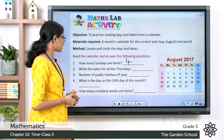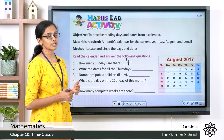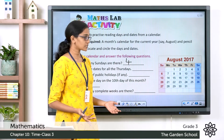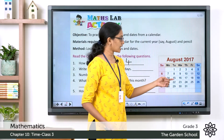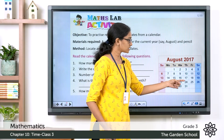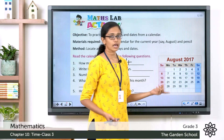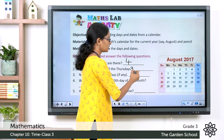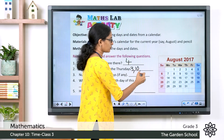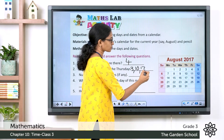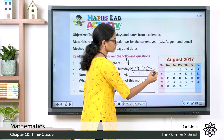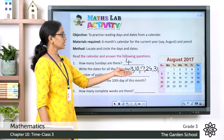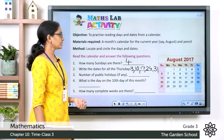The second question: write the dates for all the Thursdays. In this calendar, the dates for Thursdays are 3, 10, 17, 24, and 31. Check your own calendar and write the Thursday dates accordingly.